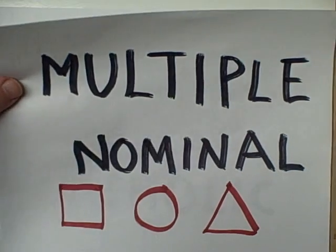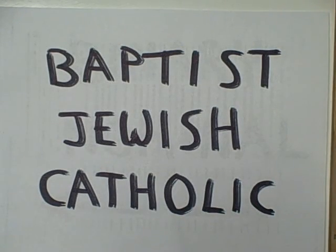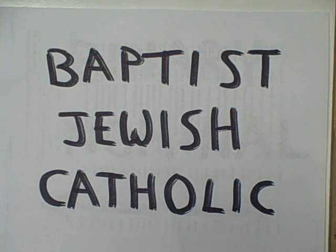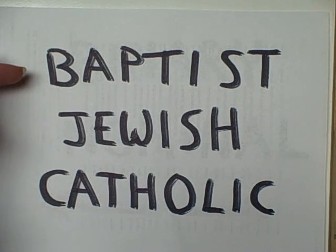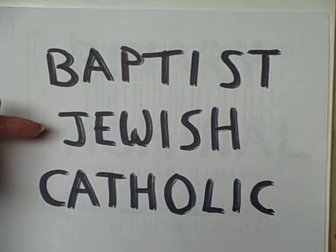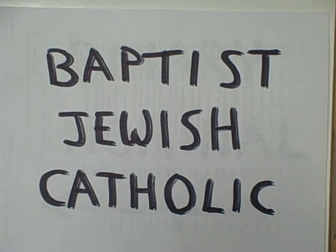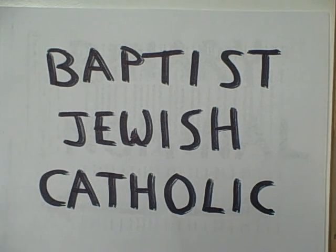Here's an example of a multiple nominal scale: religious denominational affiliation. Are you a Baptist? Are you Jewish? Are you Catholic? One of the obvious problems with this approach is when we come to statistics and getting averages. For example, if we were going to call Baptists one, Jews two, and Catholics three, are Jewish people at level two merely an average of Baptists and Catholics? That doesn't make sense.